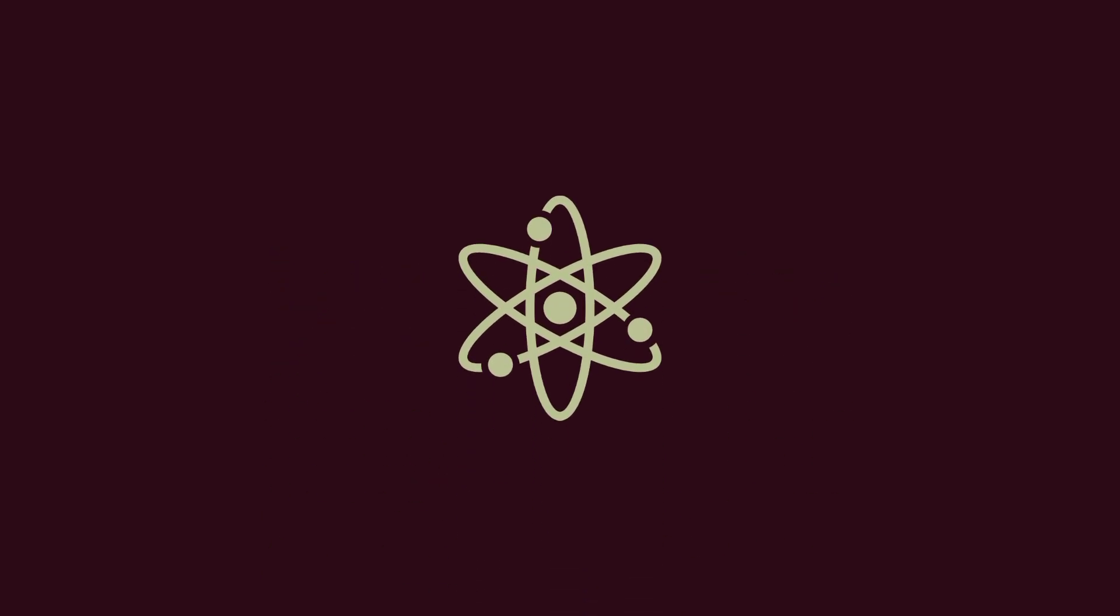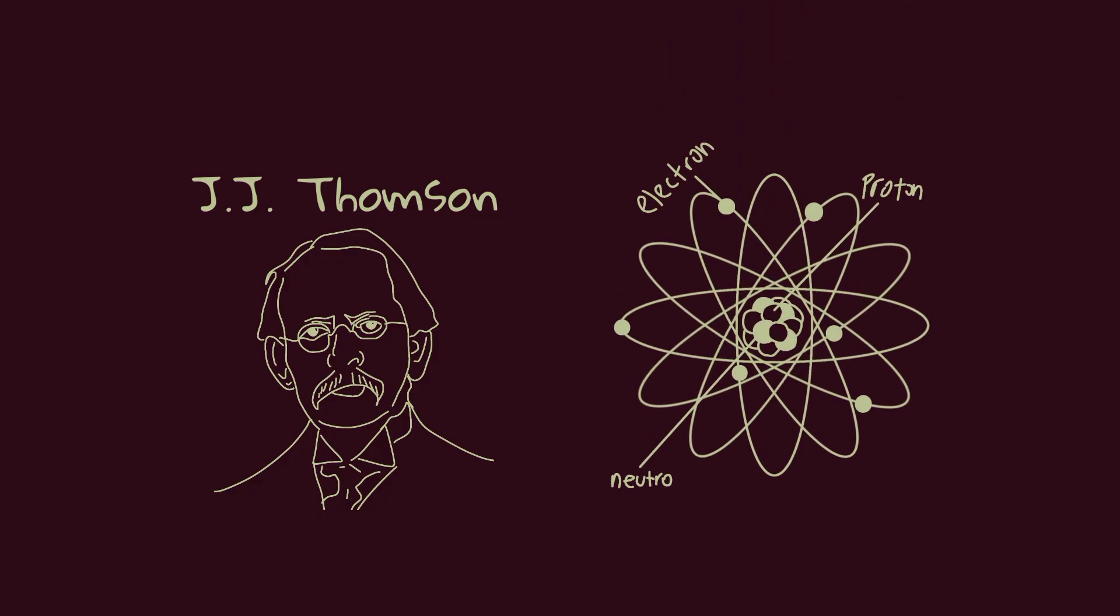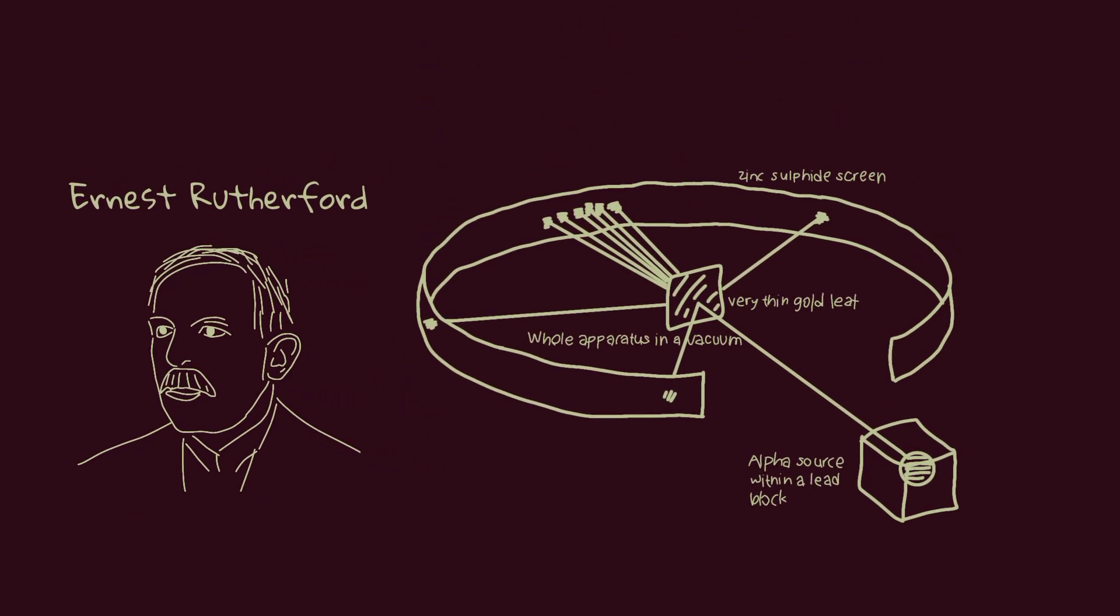At the beginning of the 20th century, science discovered that the atom was a far more complex structure than we had thought. With J.J. Thompson's discovery of the electron, it was understood that atoms contained negatively charged particles. Then, Ernest Rutherford, with his famous gold foil experiment, showed that there was a small, dense, positively charged nucleus at the center of the atom.